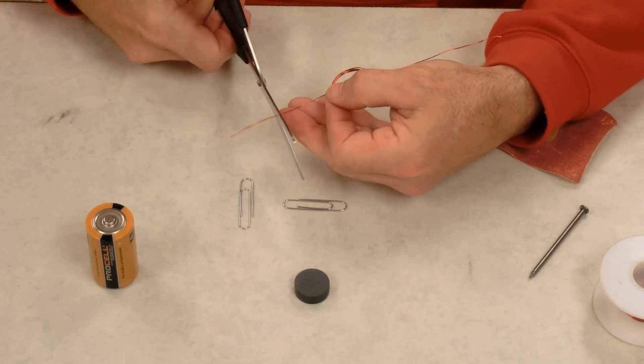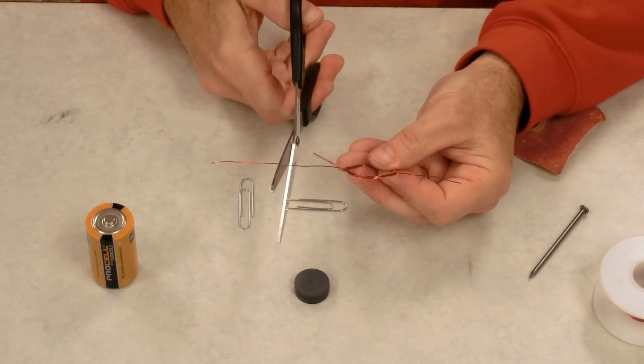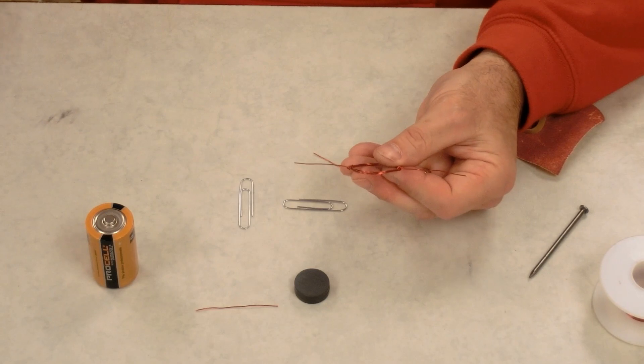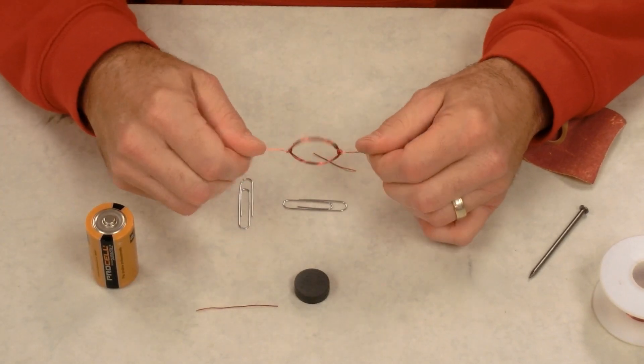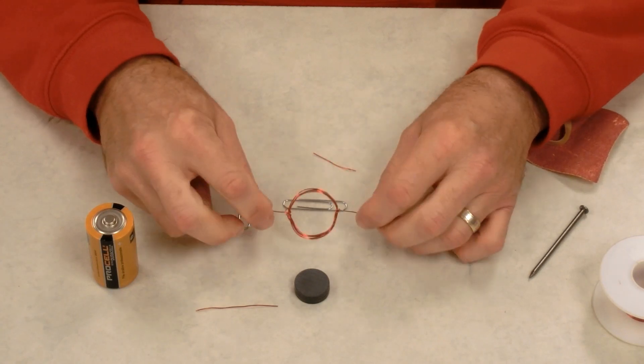Now you can trim off some of the leads. I would leave it about two inches for right now because you can always cut it shorter but you can't cut it longer.